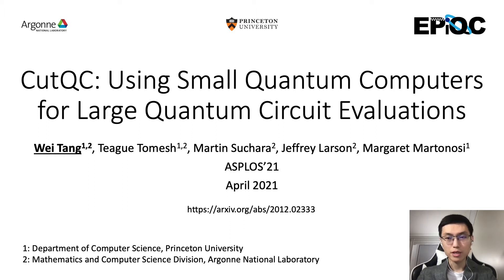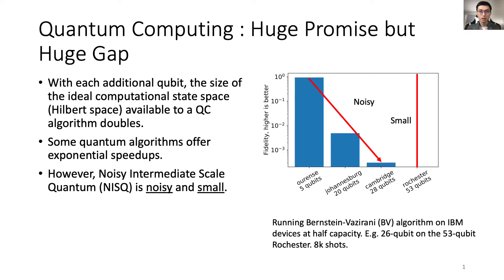This work is about combining classical and quantum computation to run large quantum circuits on small quantum computers. Quantum computing has emerged as a promising computational approach with the potential to benefit many scientific fields. Each additional qubit doubles the size of the computational state space available to a QC algorithm. Perhaps the most famous example is the Shor's integer factorization algorithm, which promises an exponential speedup over its classical counterparts.